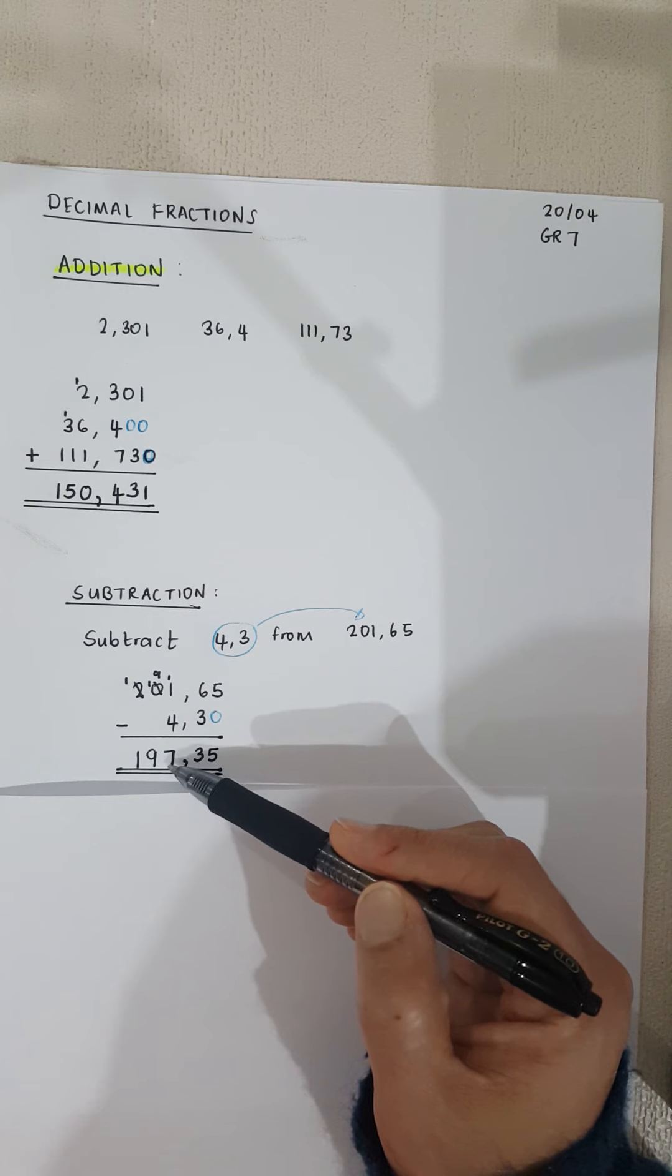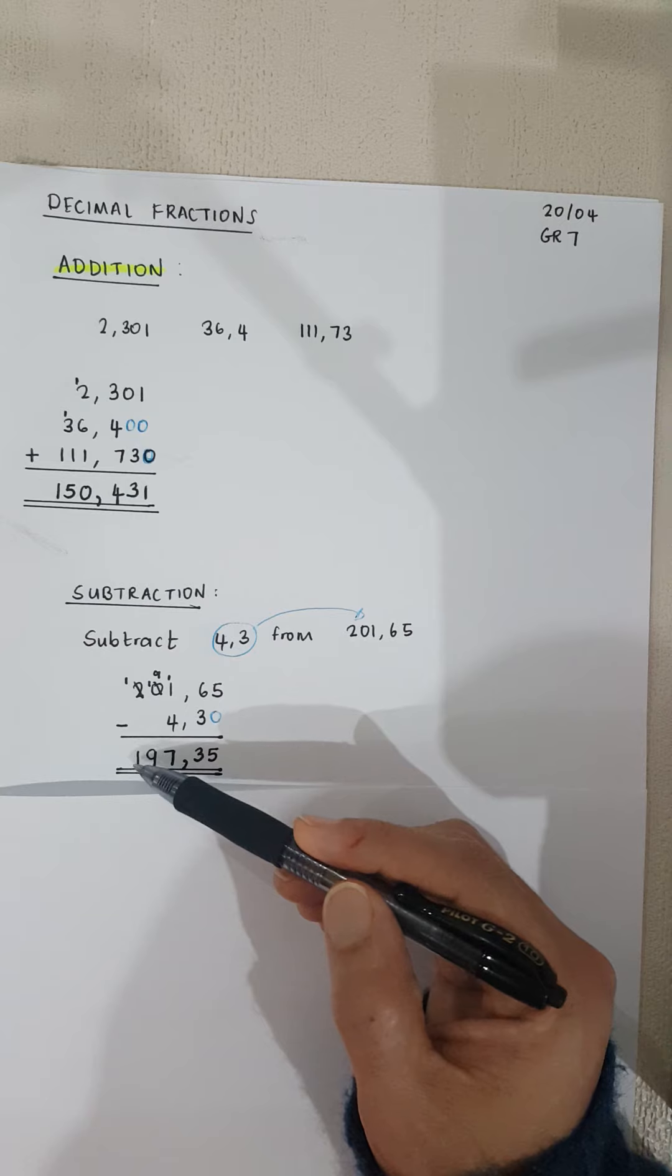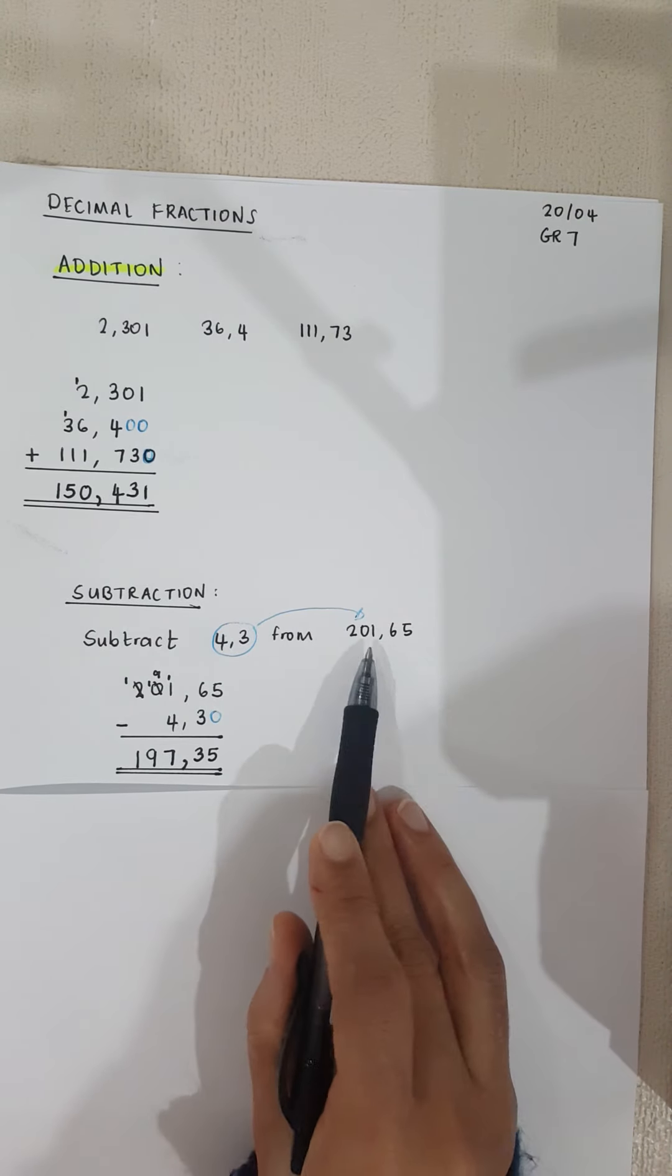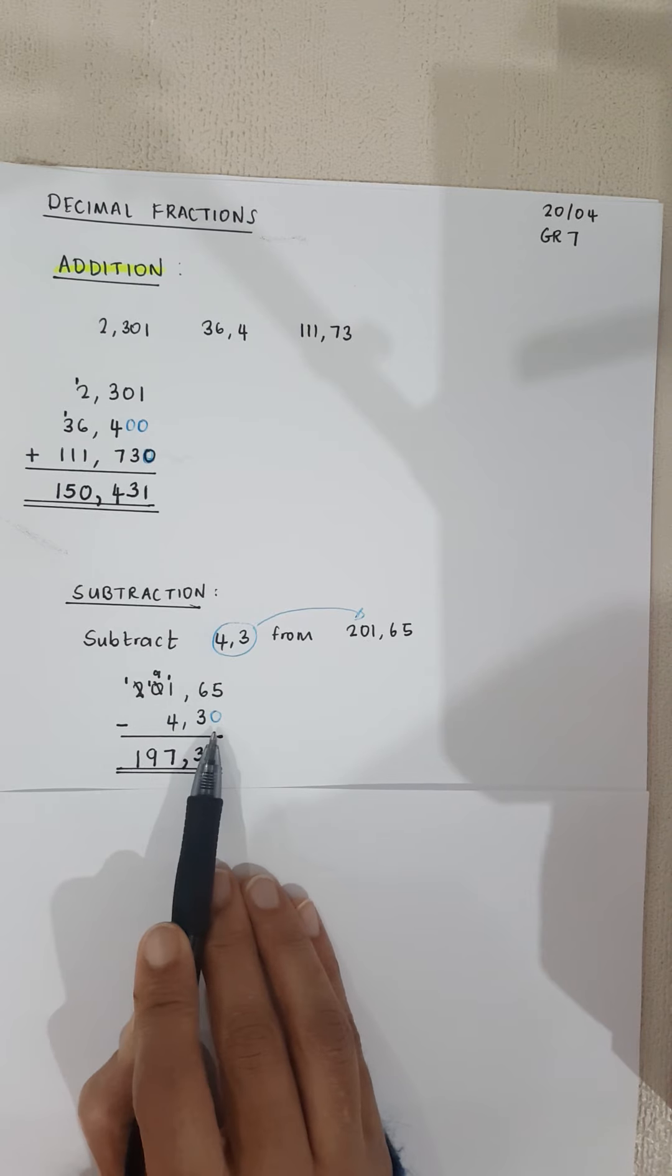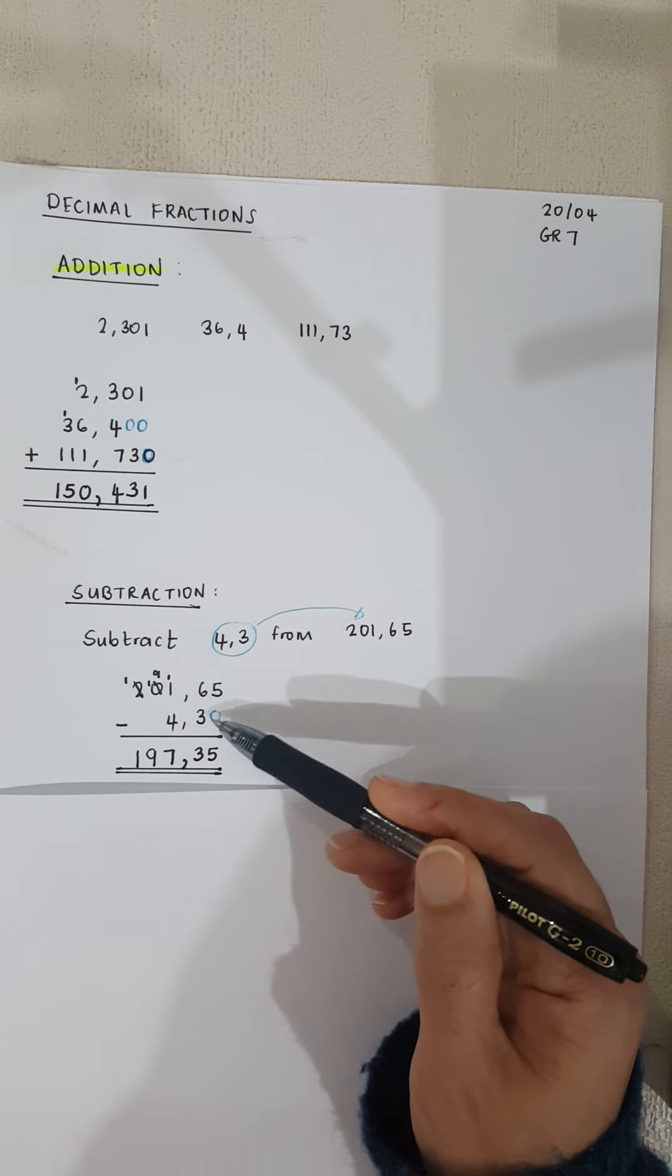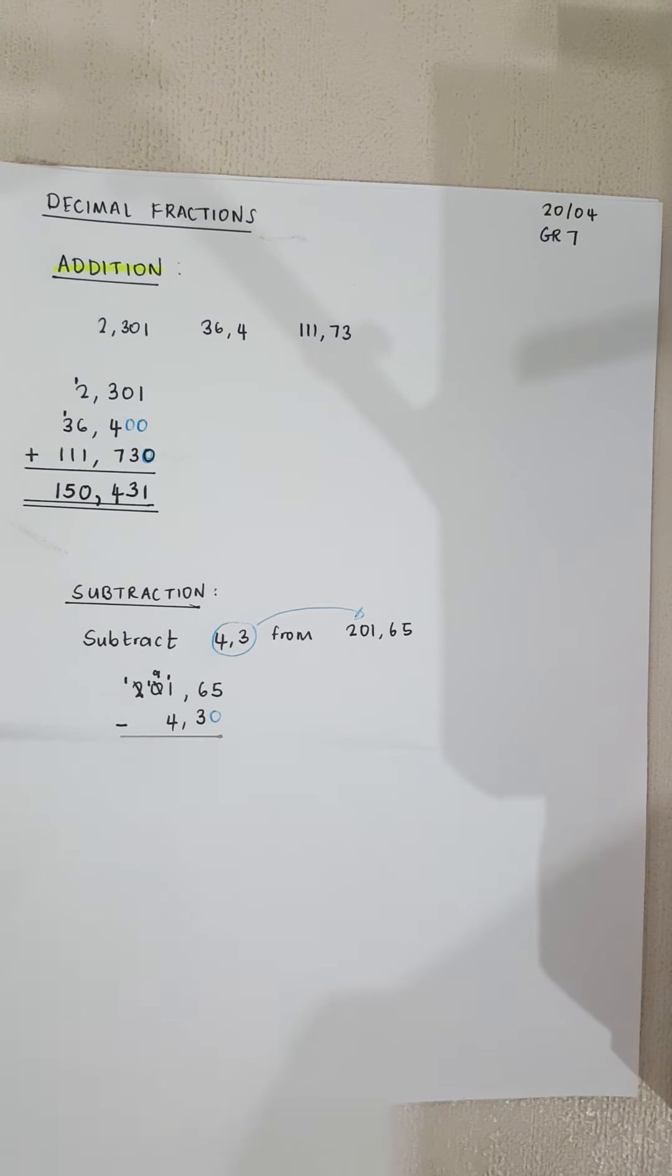So 11 minus 4 becomes 7. 9 minus 0 becomes 9, and 1 minus 0 becomes a 1. So your normal subtraction, it's just a matter of how you've written the number down. Put the comma in order, in place of in the right column, and put the extra zeros, and then you do your subtraction.